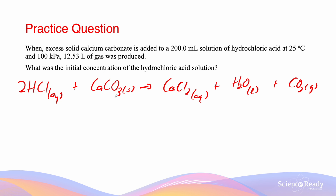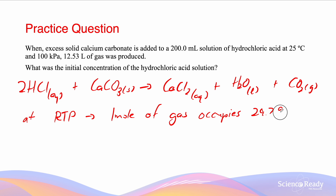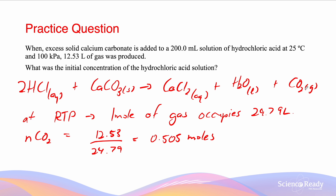We are given that 12.53 liters of CO2 was produced. Since the conditions are 25 degrees Celsius and 100 kPa — RTP — one mole of gas is 24.79 liters. So N of CO2 = 12.53 / 24.79 = 0.505 moles. The ratio of CO2 to HCl is 1:2, so N of HCl = 2 × N of CO2 = 0.505 × 2 = 1.01 moles.